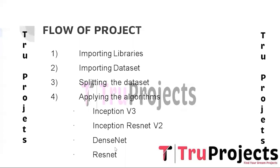The third algorithm is DenseNet, a deep learning architecture known for its dense connectivity pattern where each layer receives feature maps from all preceding layers. This dense connectivity promotes feature reuse, enabling efficient training with fewer parameters compared to traditional CNN architectures. The fourth algorithm is ResNet, short for Residual Neural Network, a widely adopted deep learning architecture that introduces residual connections, allowing the network to learn the difference between the current layer's output and the input.